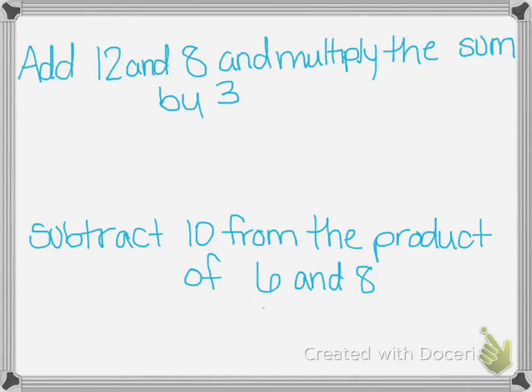Number 5 says write an expression for each statement. The first one says add 12 and 8 and multiply the sum by 3. So the very first thing I need to do is add 12 and 8. Since I do that first, I can put parentheses around it. Then it wants me to multiply that by 3. It doesn't ask you to solve. It only asks for the expression.